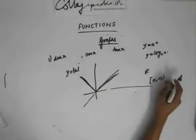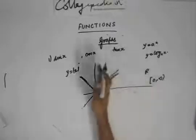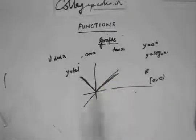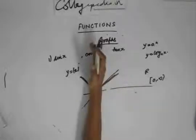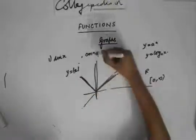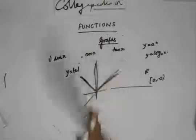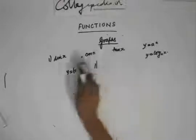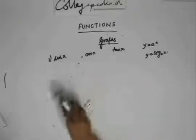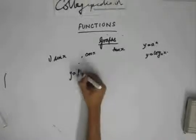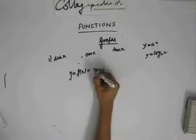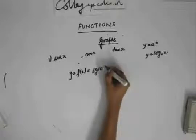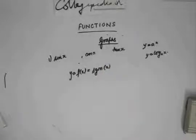The absolute value function is a non-periodic function and it is an even function — it is symmetrical about the y-axis. Now a very important function we haven't discussed yet is the signum function, written as sgn of x.